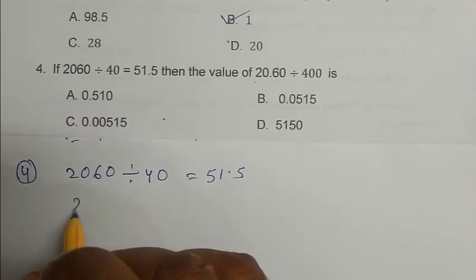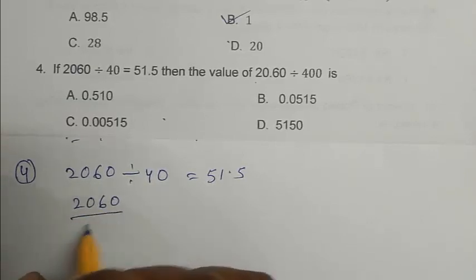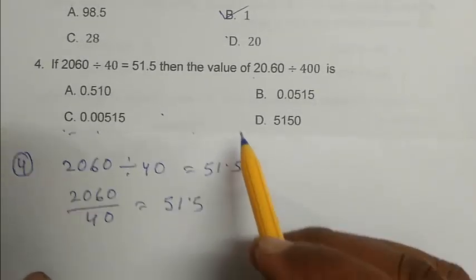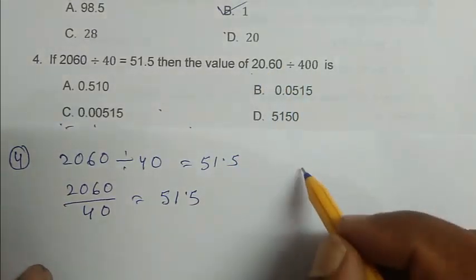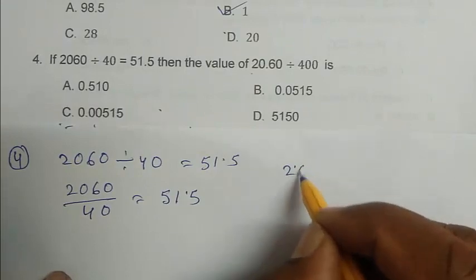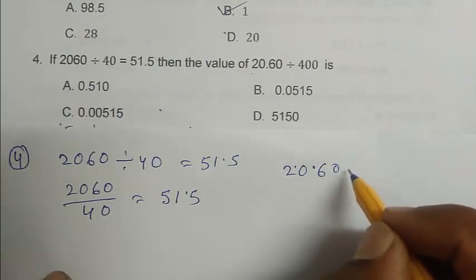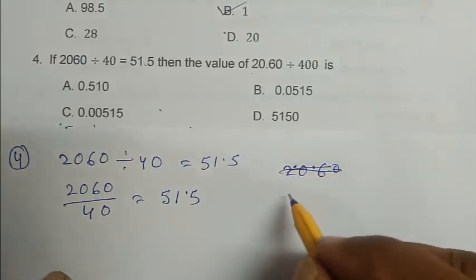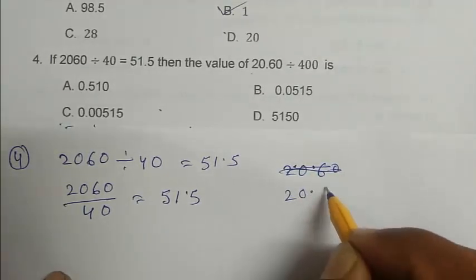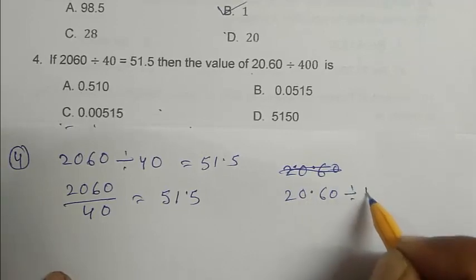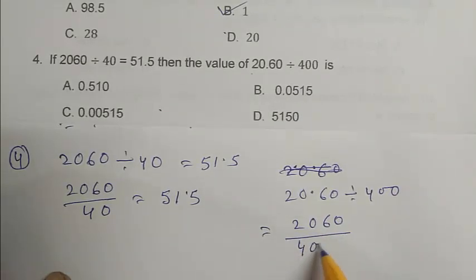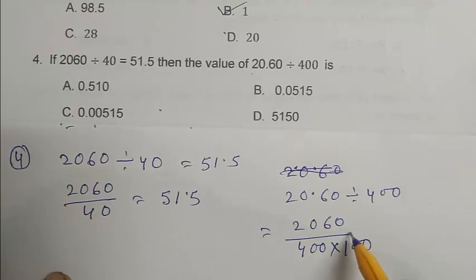So we write it like that 2060 by 40 equal to 51.5. After that we write this expression that is 20.60 divided by 400. That is 20.60 by 400 into infinity point we get 20 over there.